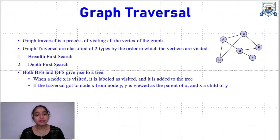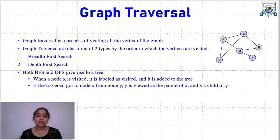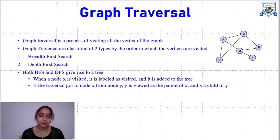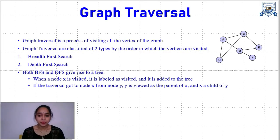This graph traversal can be done in two ways: the first is Breadth First Search and the second is Depth First Search. This traversal is classified into two types by the order in which these vertices are visited. Both Breadth First Search and Depth First Search traversal give rise to a spanning tree. Spanning tree means a non-connected graph.